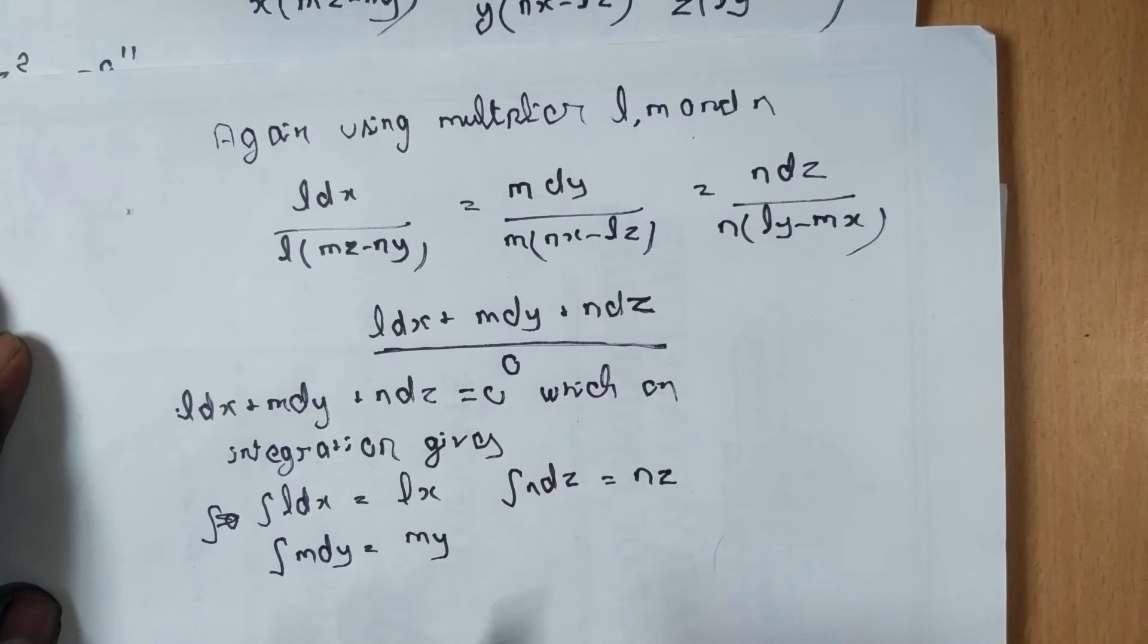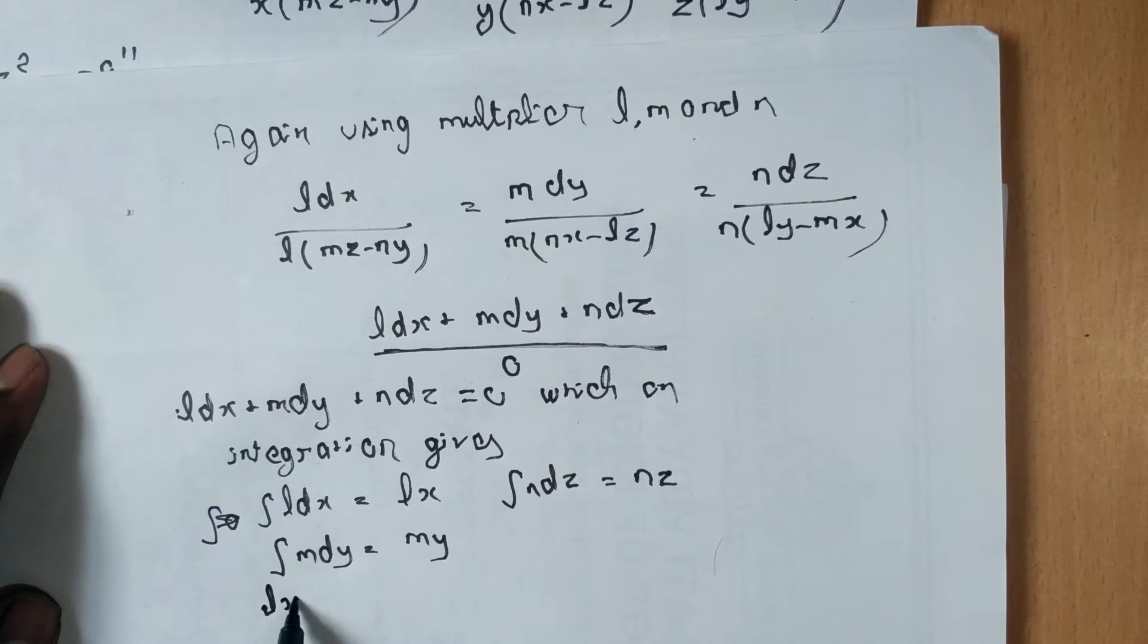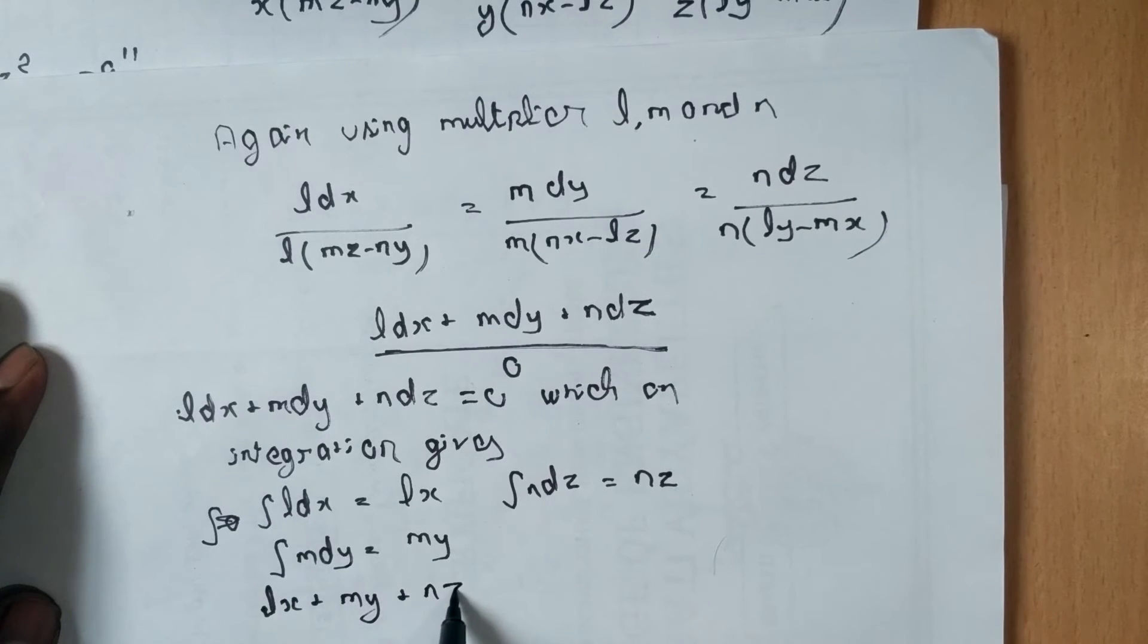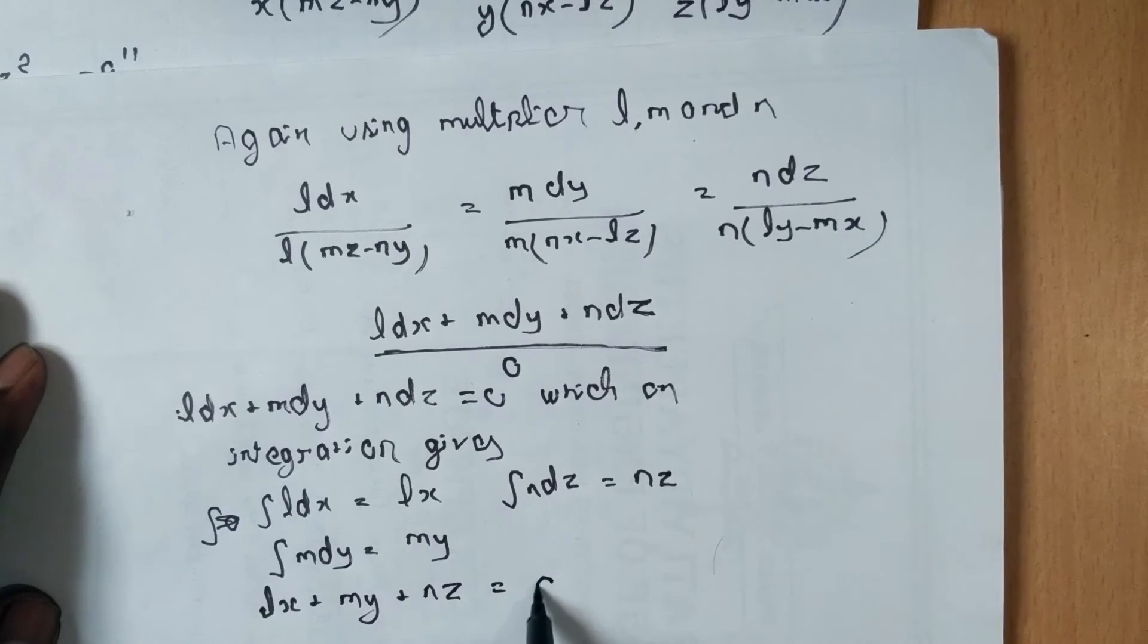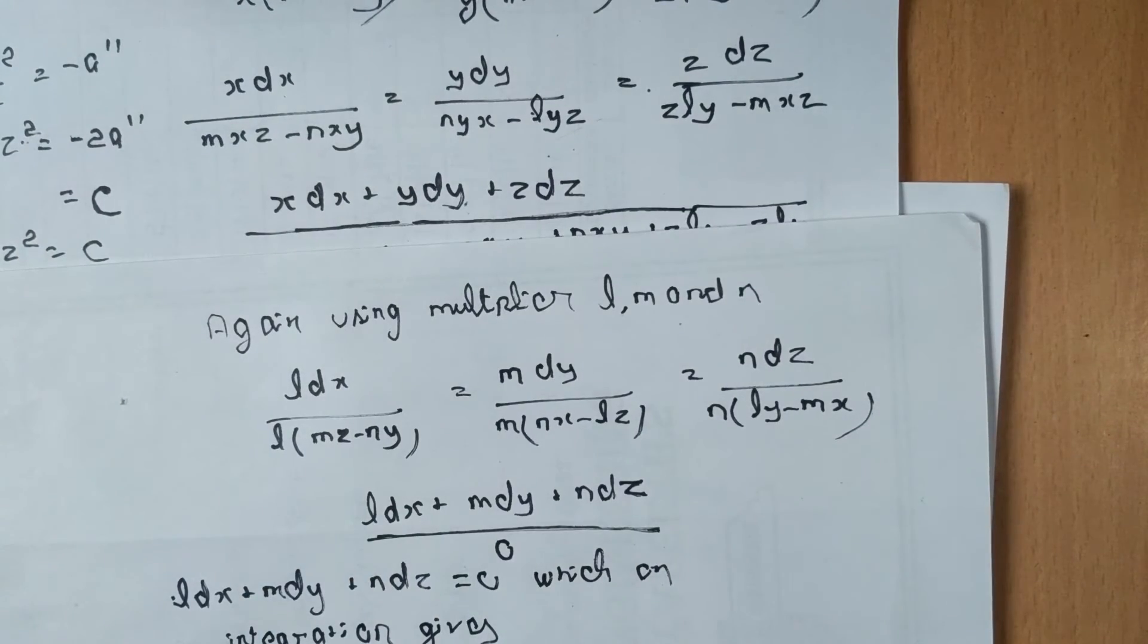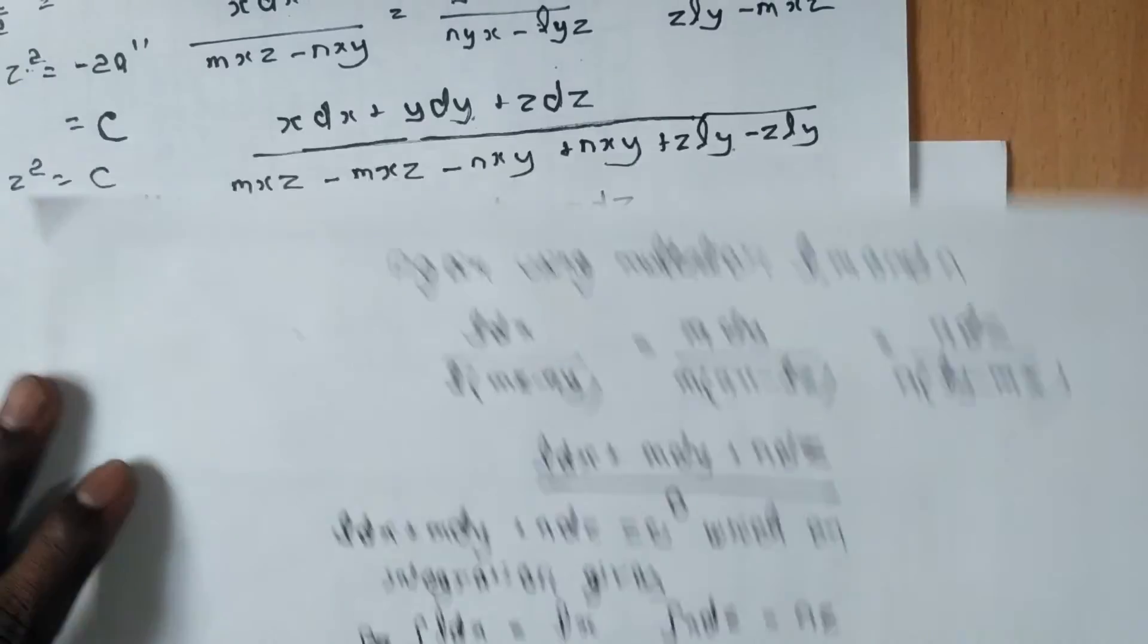So we add them together and get lx plus my plus nz is equal to c dash. First we have c, and here we have c dash.